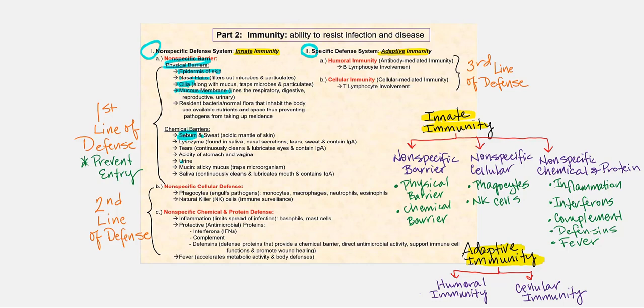Chemical barriers such as sebum and sweat are part of the acidic mantle of our skin, which limits the growth of certain microbes. Lysozyme is a small enzyme that breaks down the cell wall of bacteria. We find this in saliva, nasal secretions, tears, and sweat. They also contain IgA — immunoglobulin A. Our tears keep our eyeballs clean and lubricated, and also contain lysozyme and IgA. When something enters our eye, tear production increases.